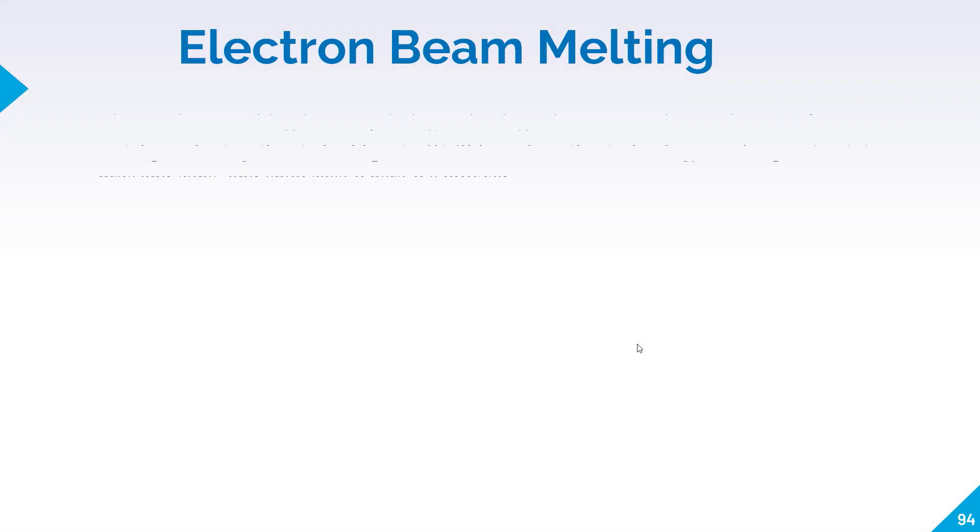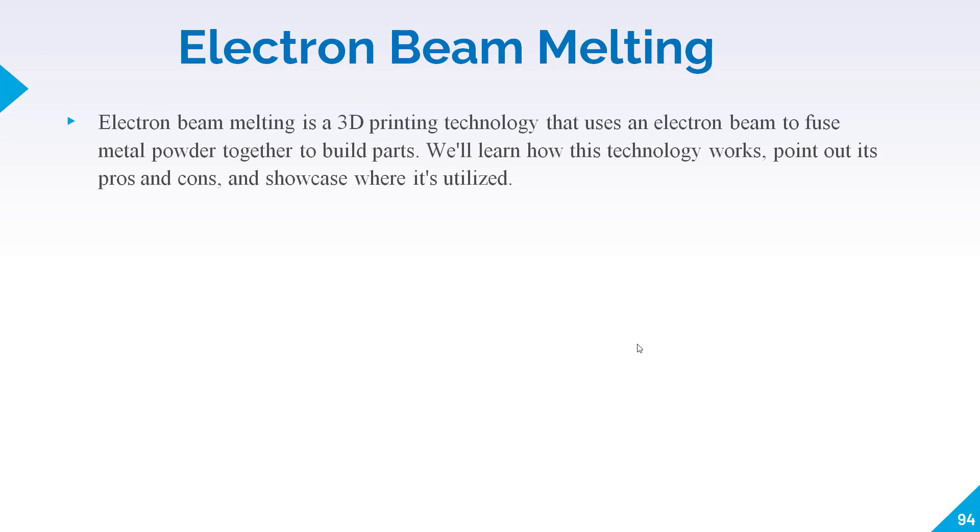Electron beam melting is a 3D printing technology that uses an electron beam to fuse metal powder together to build parts. For building any parts you will use an electron beam and there will be metal powder. When the electron beam contacts the metal powder it will get fused and your parts will be built up.